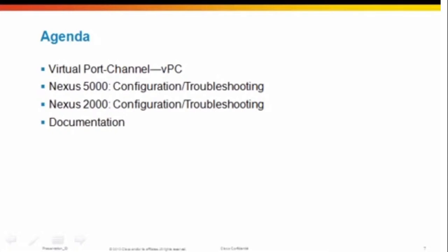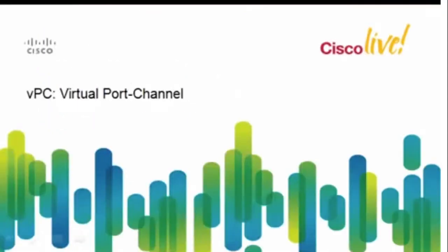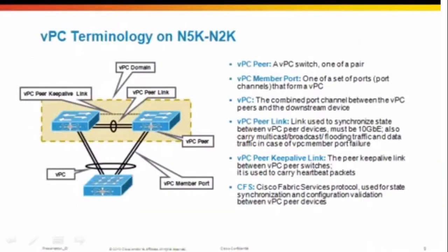As we saw in the polling, we'll start with the virtual port channel. Let's first talk about the terminology we'll be using. Here is a diagram showing VPC. We have a pair of 5000 switches and FEX downstream. A VPC peer is what we call a switch forming one of the pair. A VPC member port is one of a set of ports that will form a VPC. VPC, the virtual port channel, is the combined port channel between the VPC peers and the downstream device.